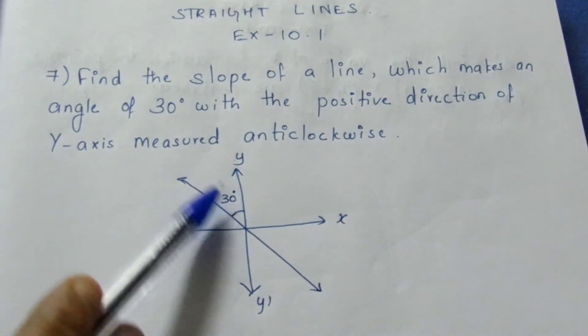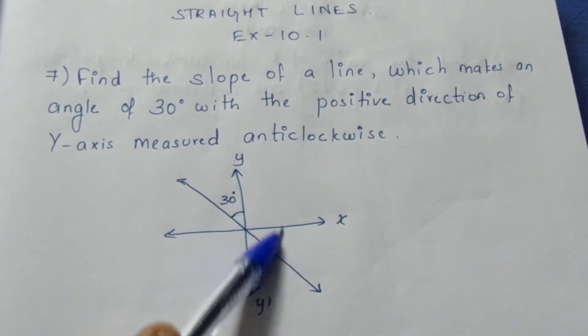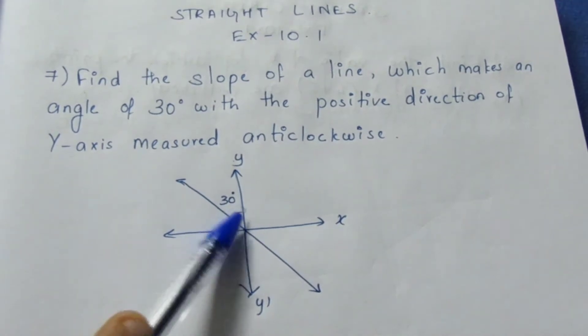We need to find the slope of the line. Here anticlockwise is, you know this is anticlockwise, so this is the 30 degree.